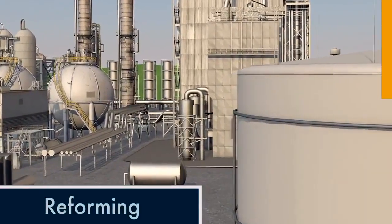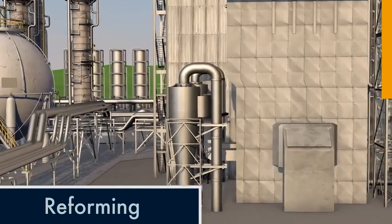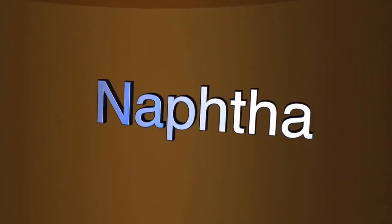Reforming is a process that increases the amount of gasoline produced from crude oil. One of the products separated in the distilling process is a liquid called naphtha.